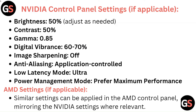NVIDIA Control Panel Settings, if applicable: Brightness 50%, Contrast 50%, Gamma 0.85, Digital Vibrance 60 to 70%, Image Sharpening off, Anti-Aliasing Application Control, Low Latency Mode Ultra, Power Management Mode set to Maximum Performance. AMD Settings: if applicable, similar settings can be applied in the AMD Control Panel, mirroring the NVIDIA settings where relevant.